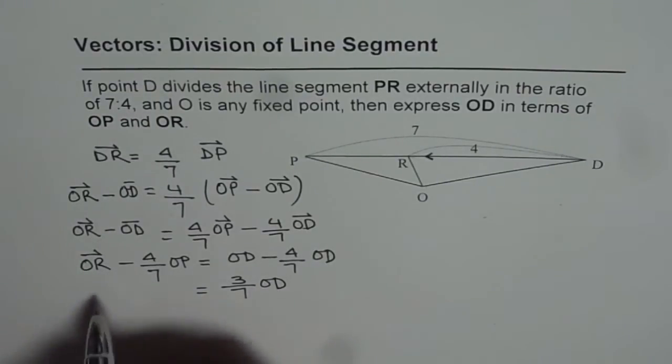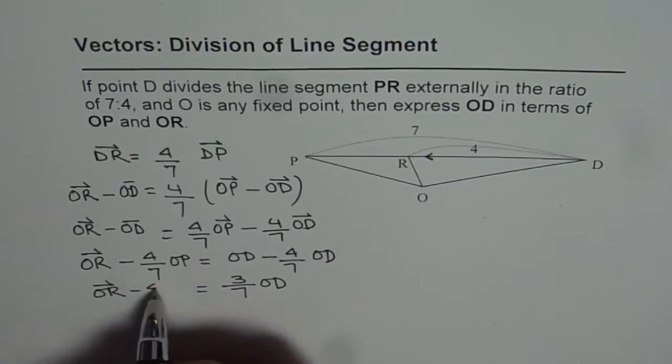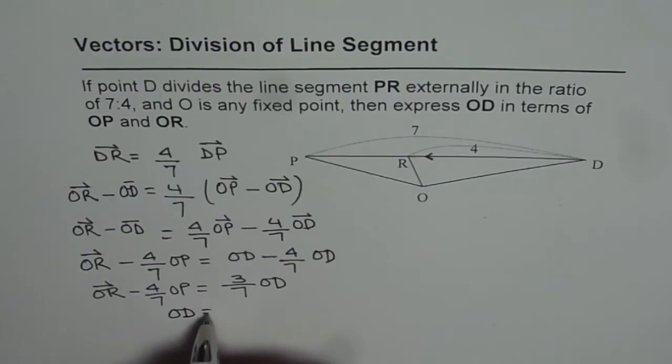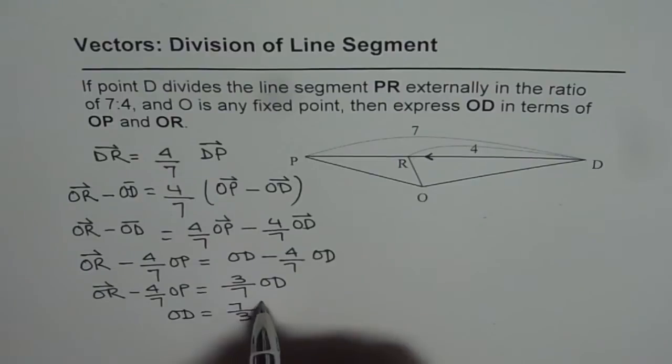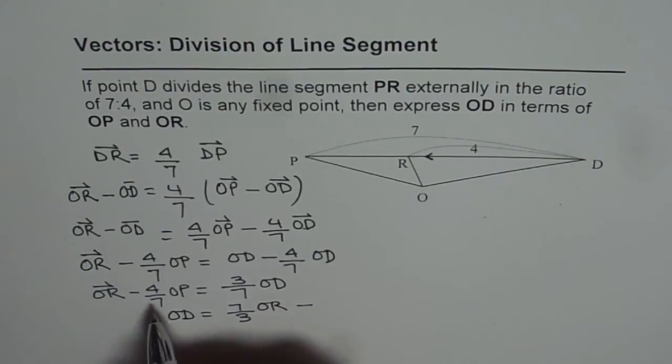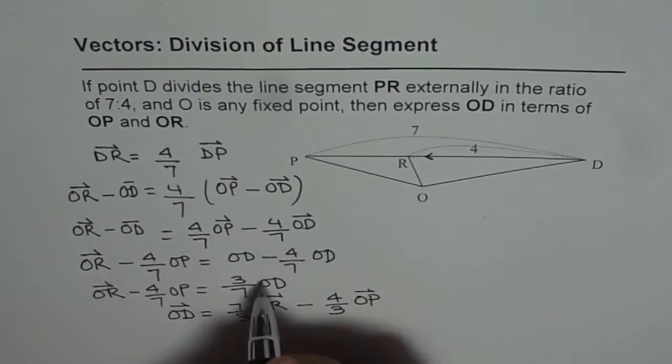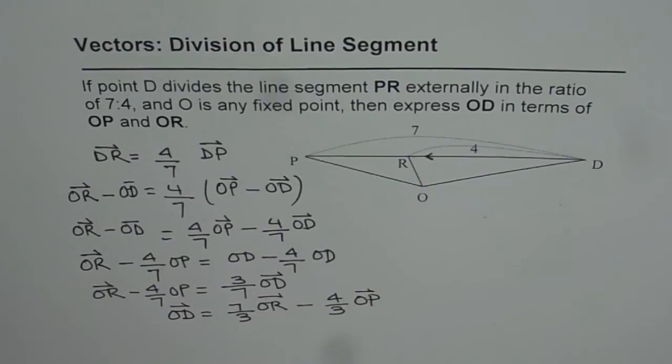Now, from here we can write what OD is. So, OD is equal to 7 over 3 OR minus 7 over 3 times 4 over 7. So, 7, 7 cancels, so we get 4 over 3 OP. So that is how we can find what OD is.